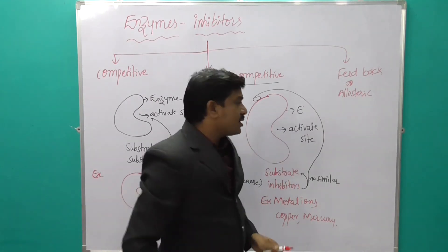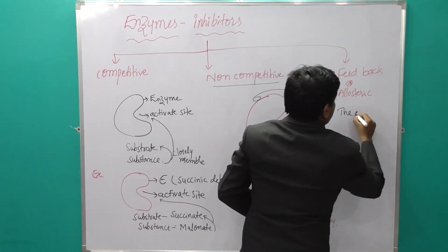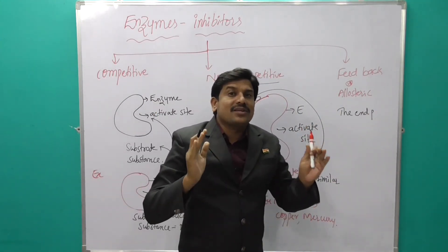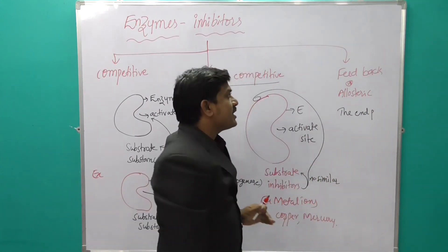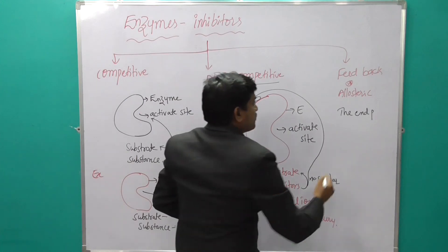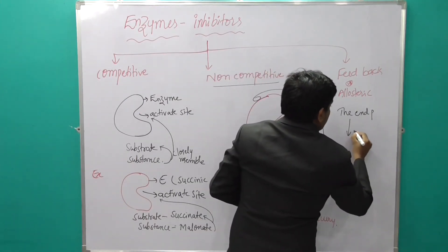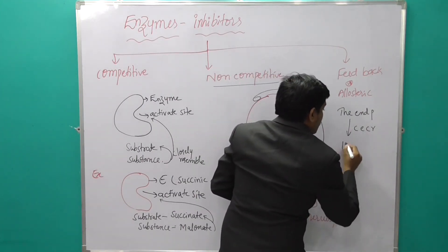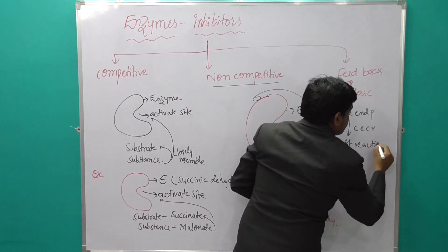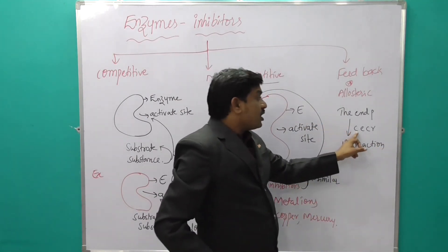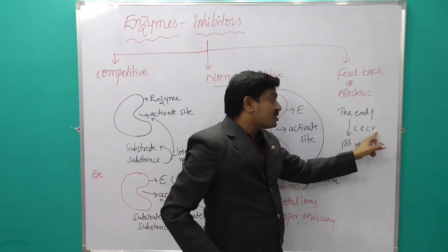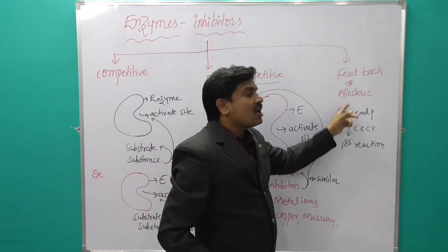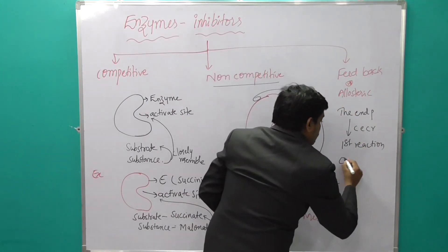The third type is feedback inhibitors, also called allosteric inhibitors. In a chain of enzyme catalytic reactions, when the end product inhibits the first reaction in the chain, this is called feedback or allosteric inhibition.